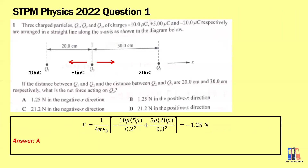Let's look at the 2022 question. We have 3 charged particles, q1, q2, and q3, of charges negative 10, positive 5, and negative 20 µC. The distances are shown in the diagram, and the question is: what is the net force acting on q2?